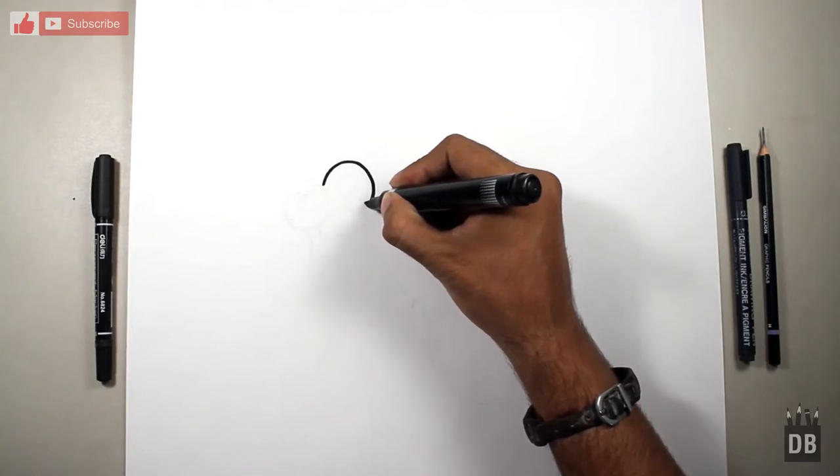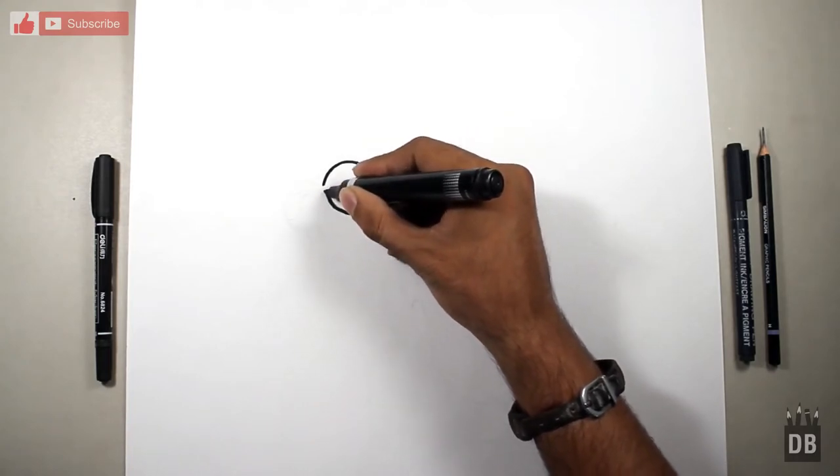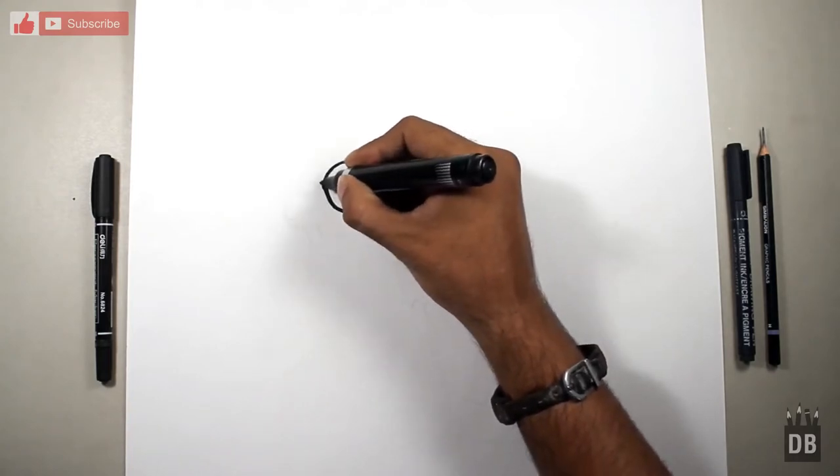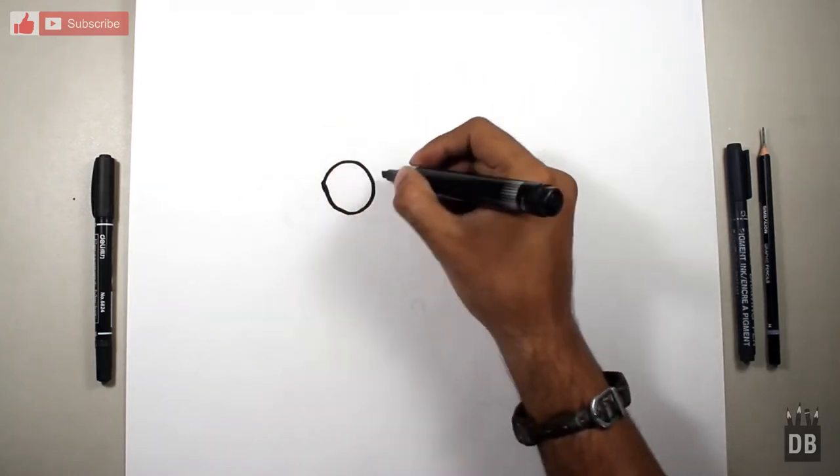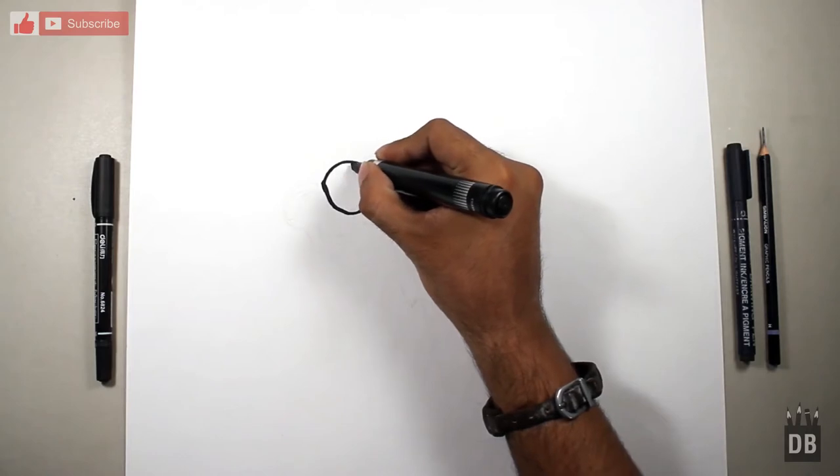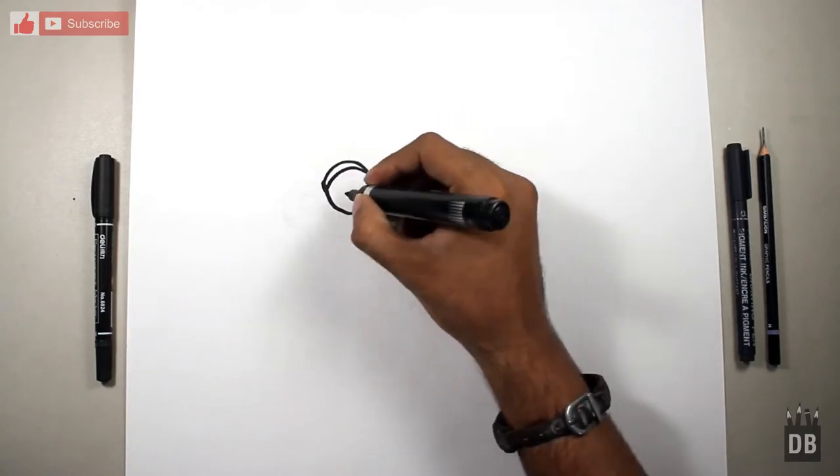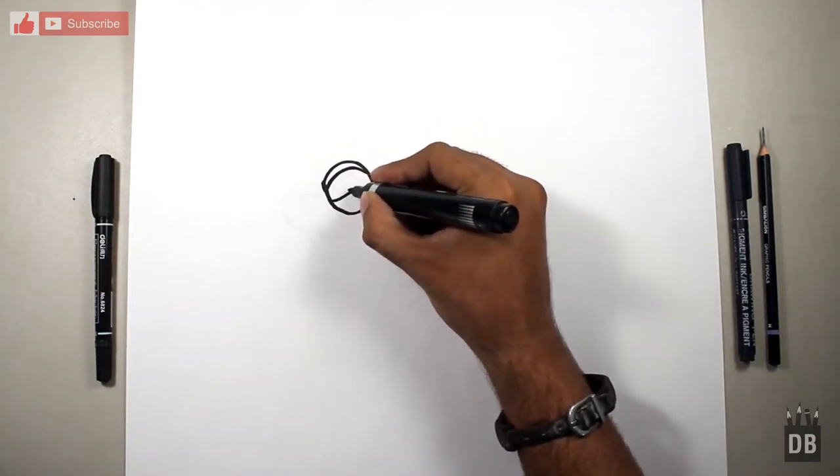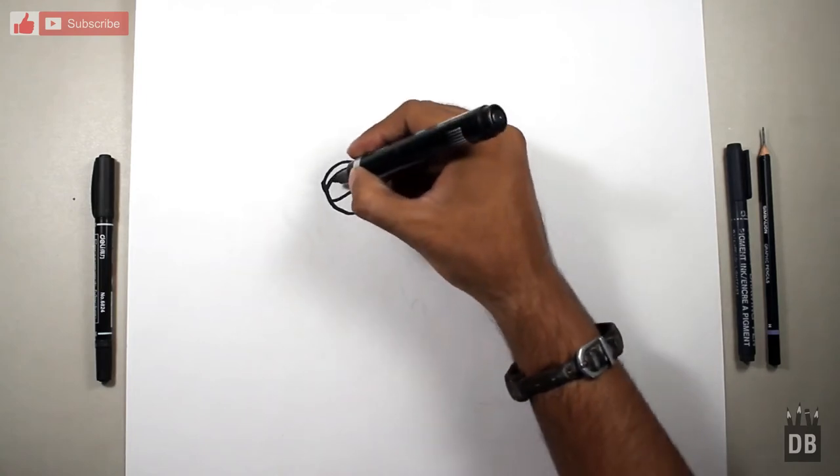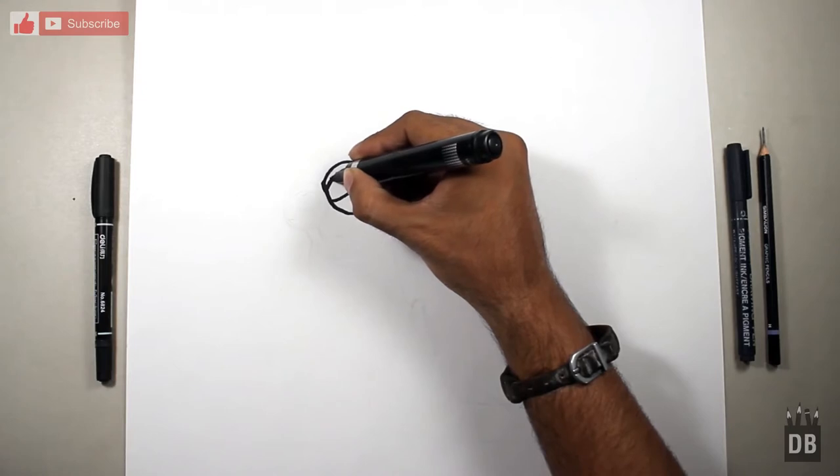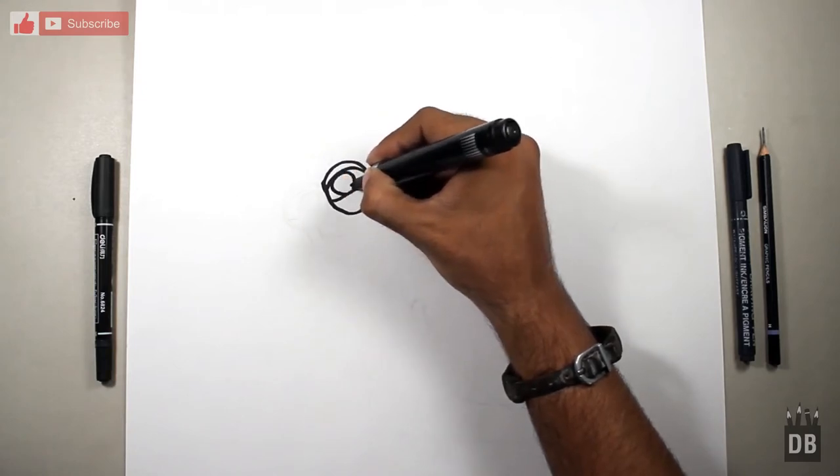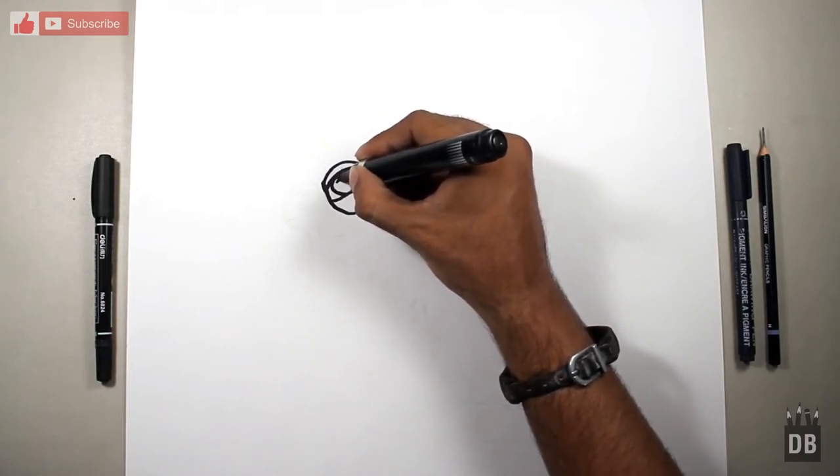You can start from the pencil so you can make the perfect round. There is the eyelet and another, and here is the eyeball. This is the shine.